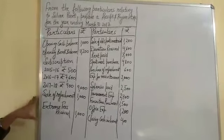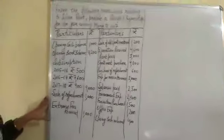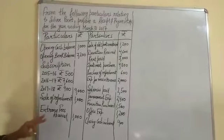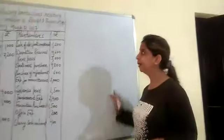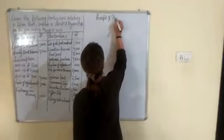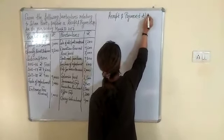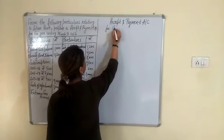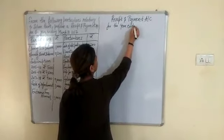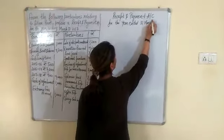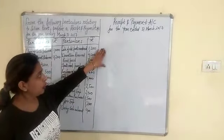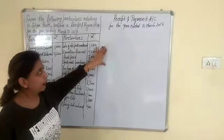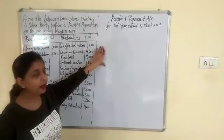As we know, the receipt and payment account is maintained on the basis of cash. In it, we record all items which are related to a previous year, a current year, or a next year. This account is based on the real account rule — debit what comes in and credit what goes out.